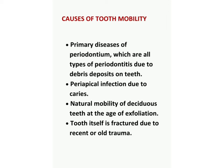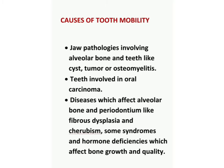The causes of tooth mobility may be primary diseases of the periodontium — all types of periodontitis due to deposits on any tooth, periapical infection due to caries, or natural mobility of a deciduous tooth at the age of exfoliation. A tooth itself may become mobile because it is fractured due to recent or old trauma. Sometimes a tooth becomes mobile when alveolar bone gets involved in jaw pathologies like cysts, tumors, or osteomyelitis.